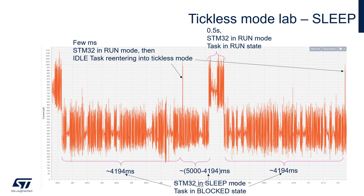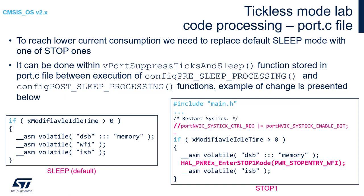As you can see, sleep mode does not give too much current reduction, so it would be good to replace it with one of the stop modes — that will be our next step. Sleep mode only freezes code execution, so the current consumption saving is not that significant. Much better results can be achieved using stop modes instead. Within stop modes on STM32, all high-frequency oscillators are stopped while the content of all registers and RAM is still kept. We need to change sleep mode into stop low-power mode within tickless mode.